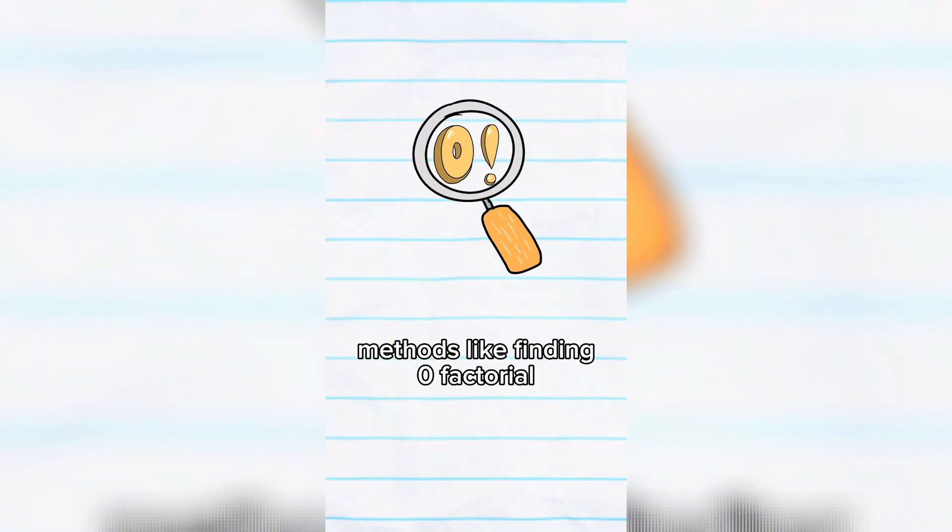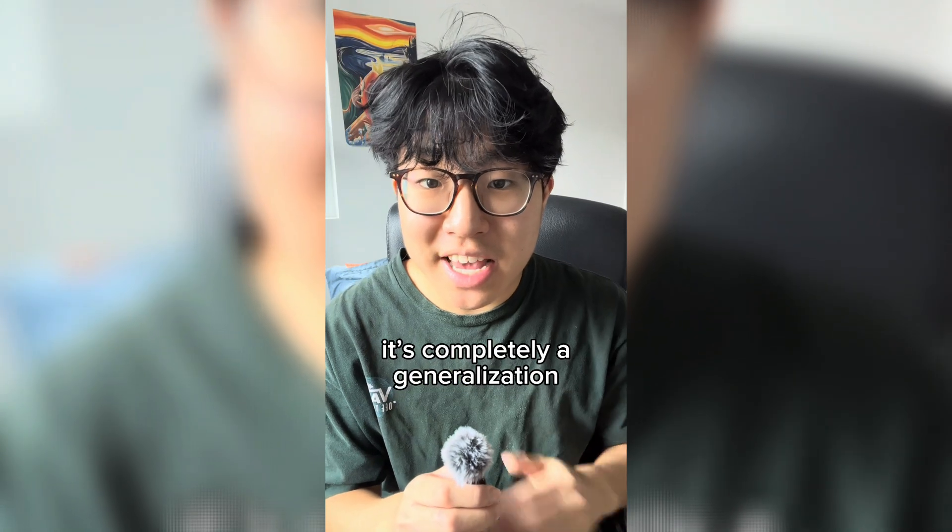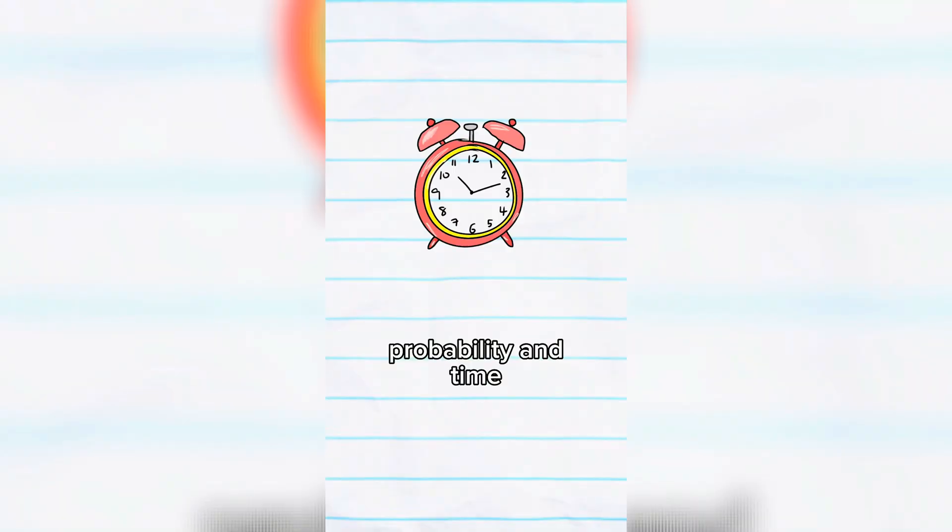And finally, methods like finding 0 factorial have allowed us to find things like 1 half factorial. It's known as gamma, which is this integral. It's completely a generalization used in, for example, probability and time.